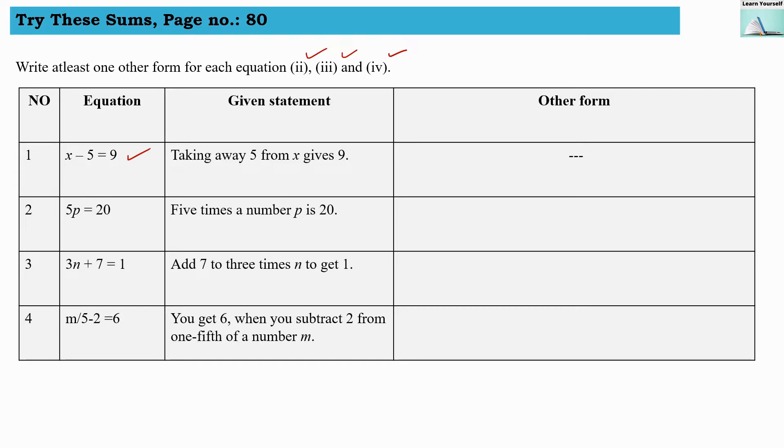So they say that 5 times a number p is 20. So here they have used times. So instead of times we can use multiply. So let us write with this word that, so here is the statement that 5 multiplied by p gives us 20. So both statements represent this equation but the language differs.